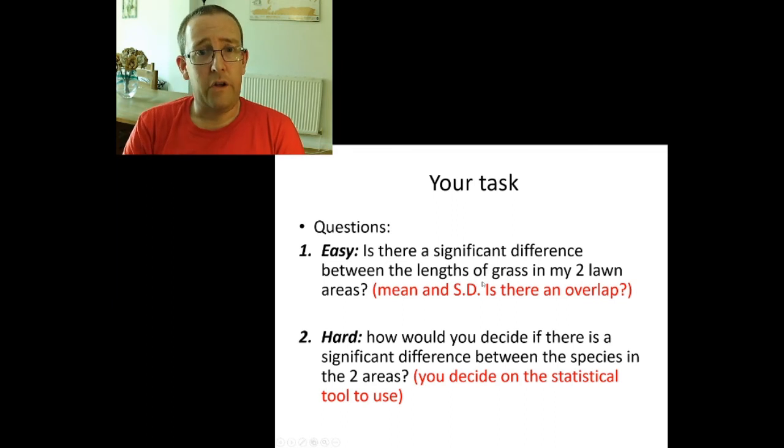So as a final task in this module, here is what I want you to do. We're going to go back to the data from my garden. Now the easy question is, is there a significant difference between the lengths of grass in my two lawn areas? So what's the mean and standard deviation for each and do they overlap? Pretty straightforward. Harder is how would you use the species data to decide if there's a significant difference between the species in the two areas? So you decide on what statistical tool and how you would use that data. Now, this is more like what you're actually going to get in an exam. You won't be asked to do the statistical tests, but you might be asked to suggest what statistical test, what data you would use, how you would use it, or interpret the data that the examiner has given you.